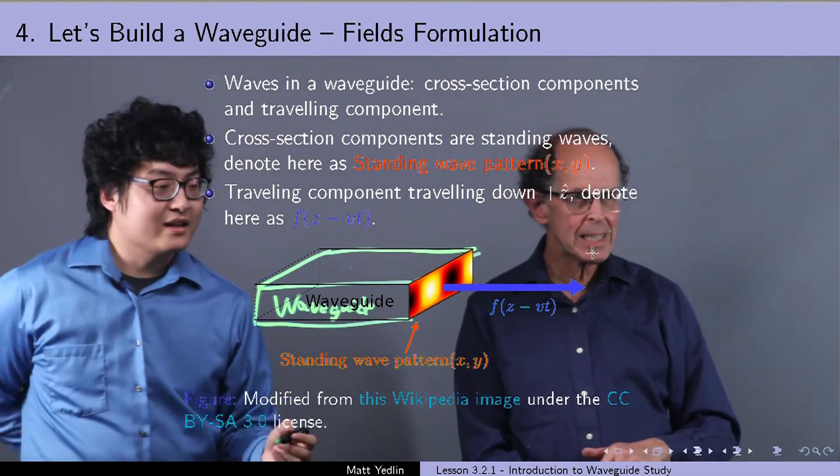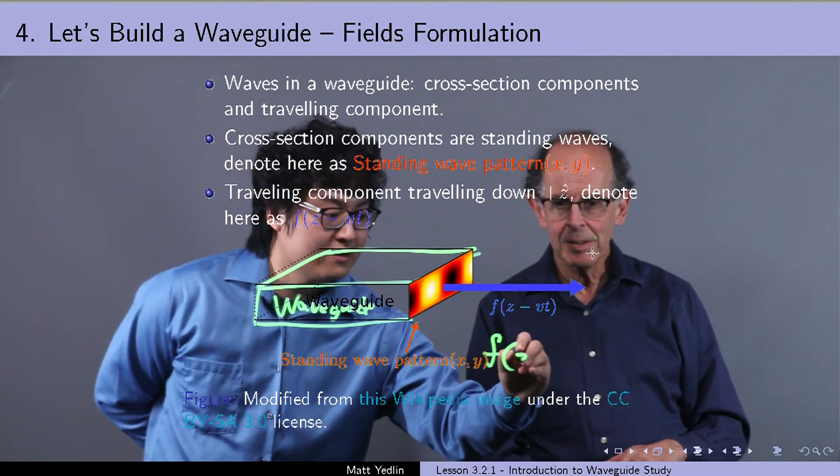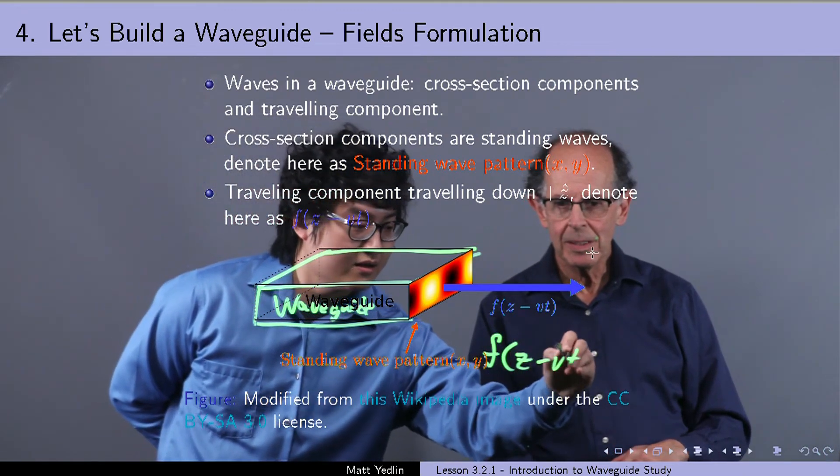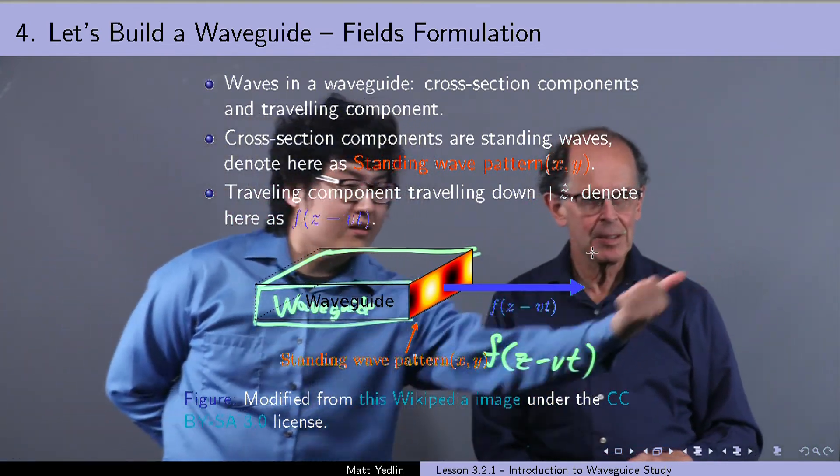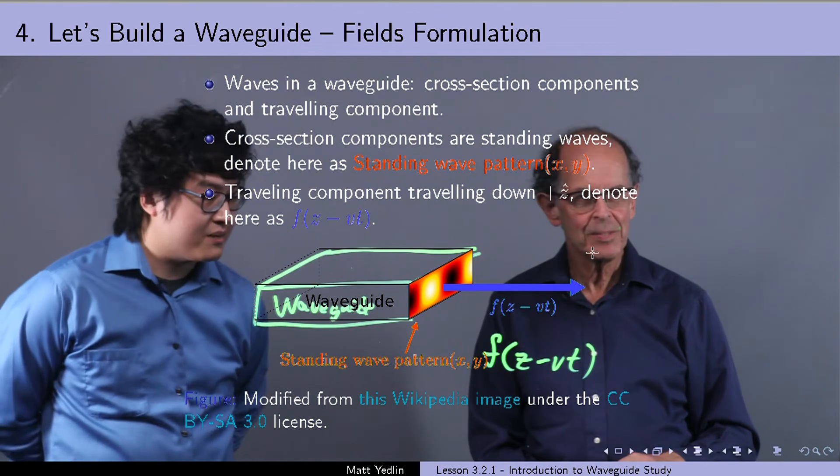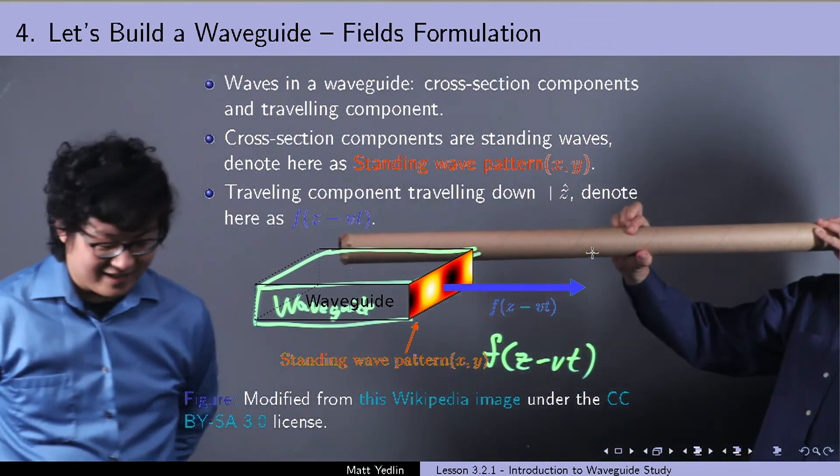There it is, in the red and yellow and black. Yeah, and there's some traveling component, F of Z minus VT. So it's traveling in the forward direction at some velocity V. And it works just like this. The sound goes down the waveguide.